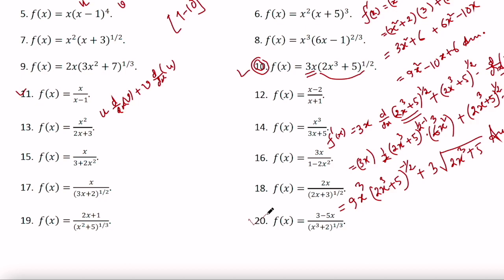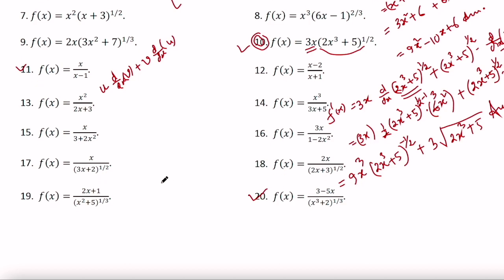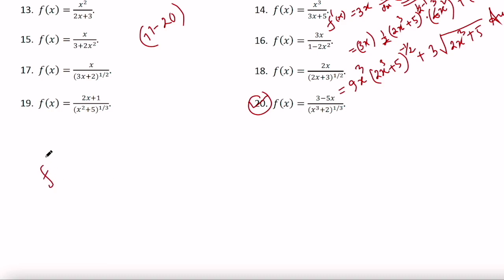Problems 11 to 20 are also similar — you can use the quotient rule for problems 11 to 20. Let me solve problem 20. f prime x — let us first solve this using the quotient rule, and then I will also show you how to solve it using the product rule.